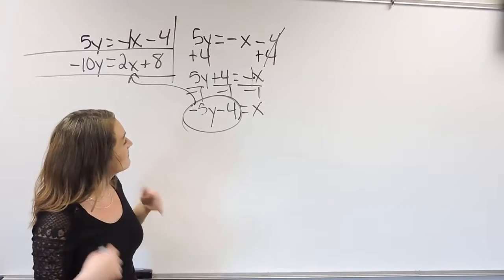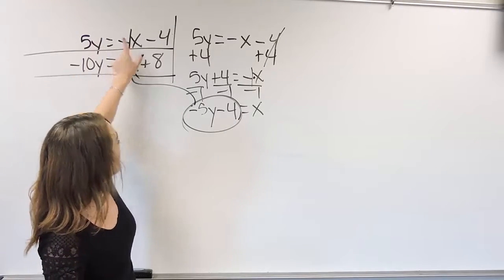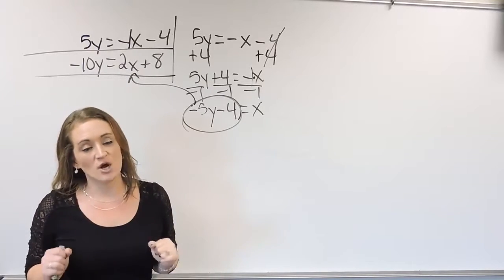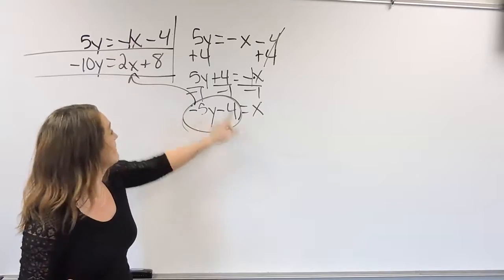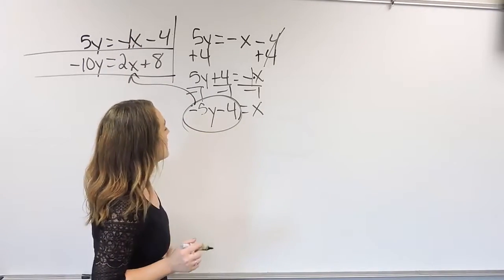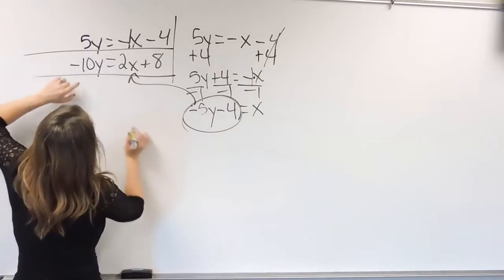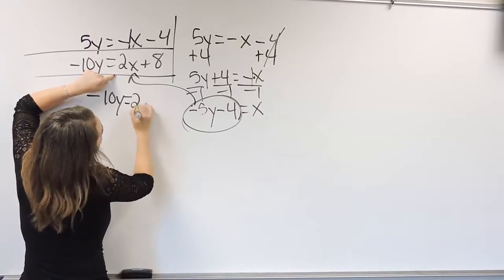It's always easier. It makes our life easier if we're able to pick one of our variables that has a 1 in front. So always go with that one. Solve for that variable there and plug into the other one. So I'm going to plug in negative 5y minus 4 in for x here. So that means I'll have a negative 10y is equal to 2,